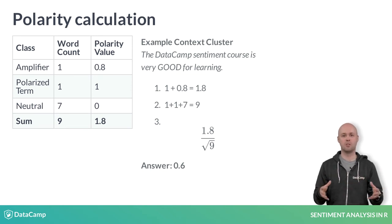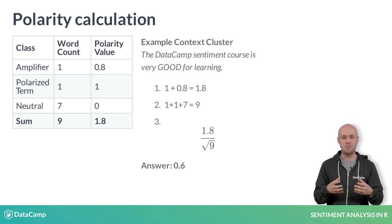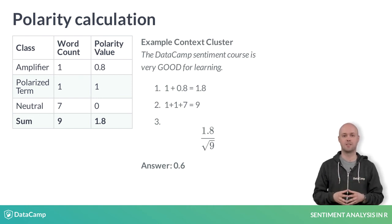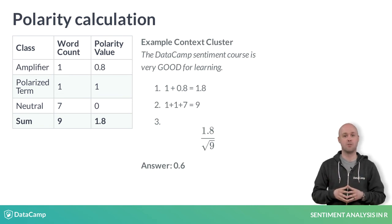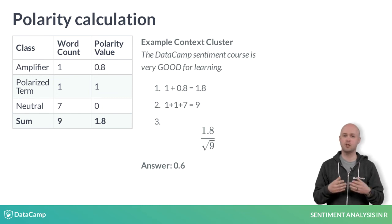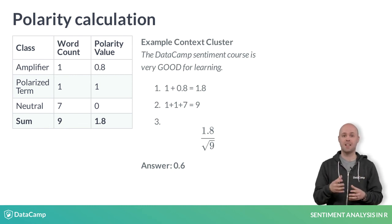Dividing by the square root of the total number of words accounts for the polarity term density. The thought being that densely packed polarized words, negators, and valence shifters engender stronger polarity feelings. Now that you know how the polarity function works, you will close out this chapter applying it and adjusting the subjectivity lexicon to fit your particular text. For example, in the Twittersphere, using terms like LOL for Laugh Out Loud should be added as positive words in the lexicon. Without these channel-specific terms, your analysis may completely miss important context clusters.